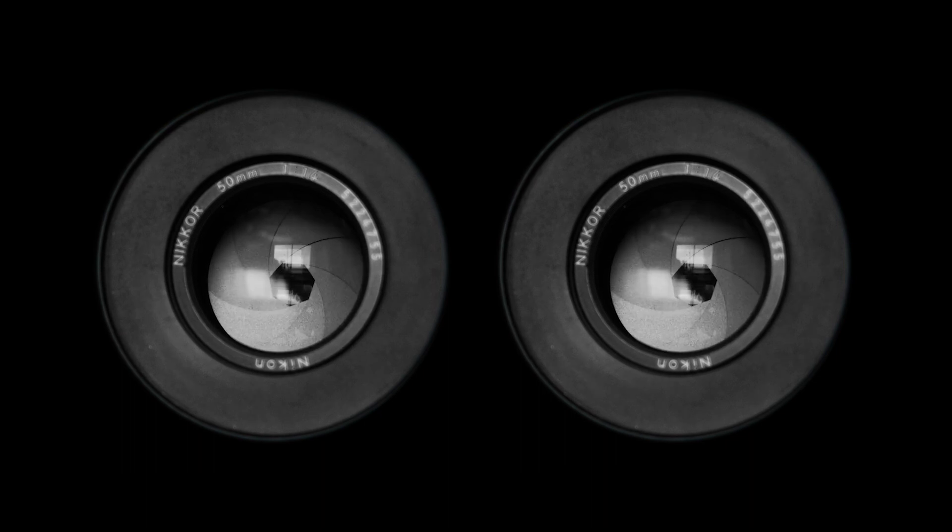This algorithm allows the robot, using two cameras, to calculate the distance to nearby objects. For example, our robot can use stereo imagery to avoid running into a tree as it drives around.